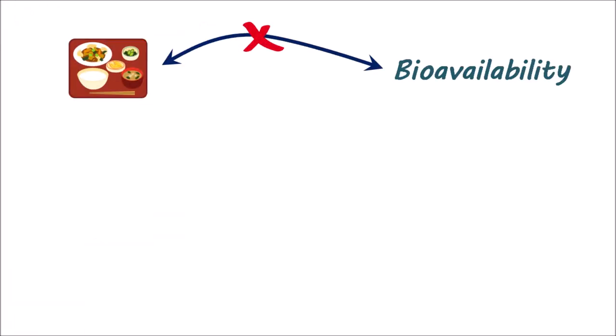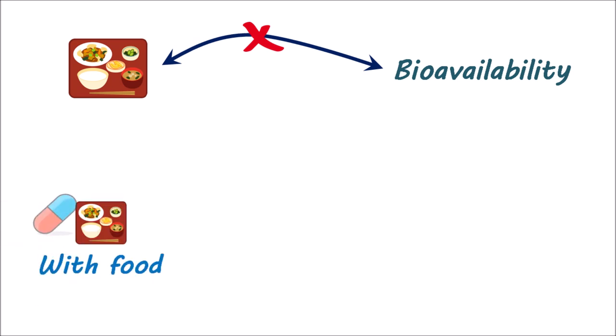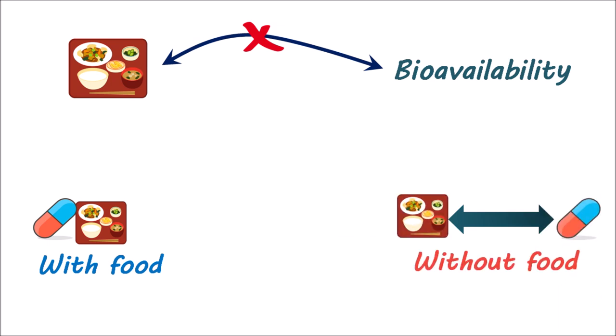Food has no significant effect on the bioavailability of pregabalin, so this drug can be taken irrespective of food intake. It can be taken either with food or without food, depending on the patient's compliance and other drugs co-administered with pregabalin. In order to achieve consistent plasma therapeutic levels, it is better to take this drug every day at the same time throughout the therapy.